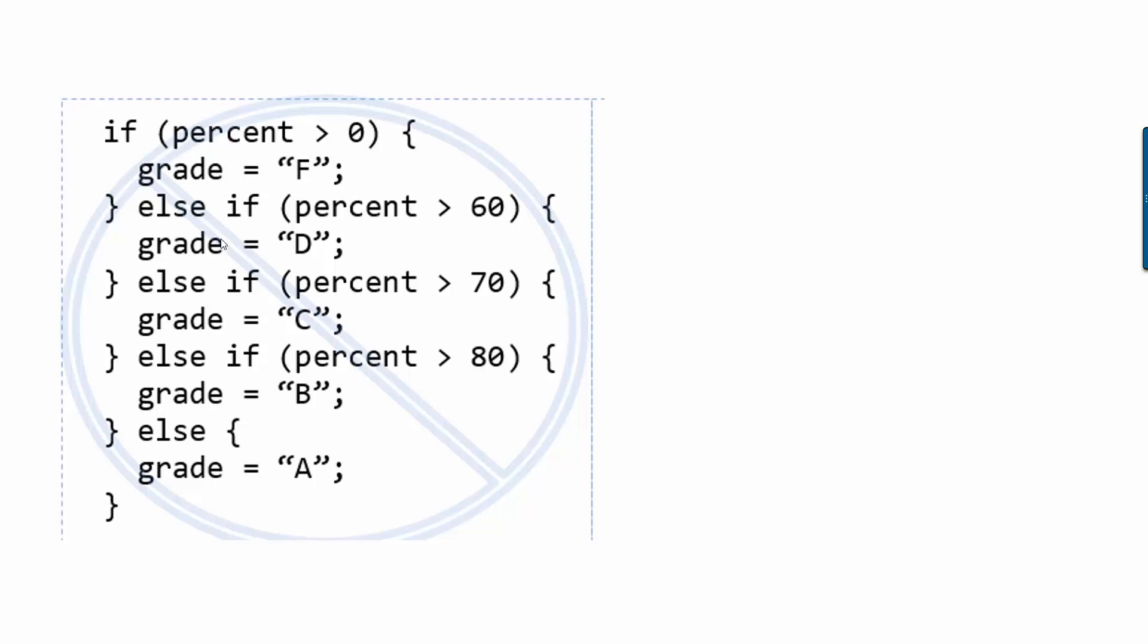Remember that as soon as one of the if statements is true, none of the other if statements will even run. So as soon as this first if statement is true, like if I got 100% on the test, it's true that my percentage is larger than zero. And so I get assigned an F. And then because this ran, we never even look at the rest of them. So that would probably make people sad if that's the way that you wrote your grading code.